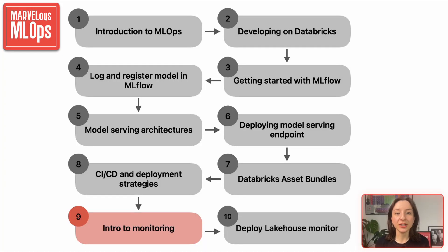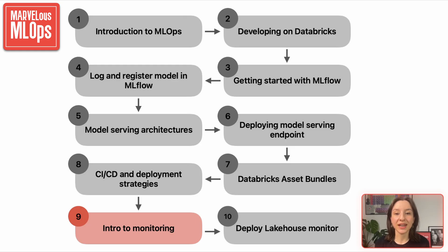So far, we've walked through the key components of a classical machine learning pipeline, starting with preprocessing, followed by training, and finally model deployment using delta tables and MLflow. In the previous lectures, we also learned how to deploy workflows using data asset bundles, which help package the code and configuration in a structured way. In the last lecture, we covered CI/CD pipelines, including how to automate deployments and manage environments, along with authentication using service principals for secure and production-grade access. Now we have come to the last piece: monitoring.